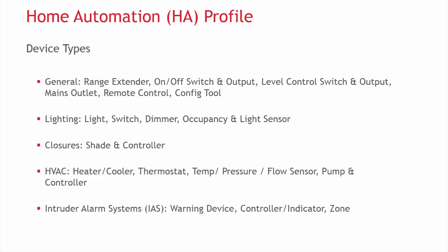The general device types in the HA profile include basic range extenders, which primarily act as a router and have no other functionality. More interesting devices include On-Off switches and their corresponding outputs. There are also level control switches and outputs, mains outlets, remote control outputs, and configuration tools.